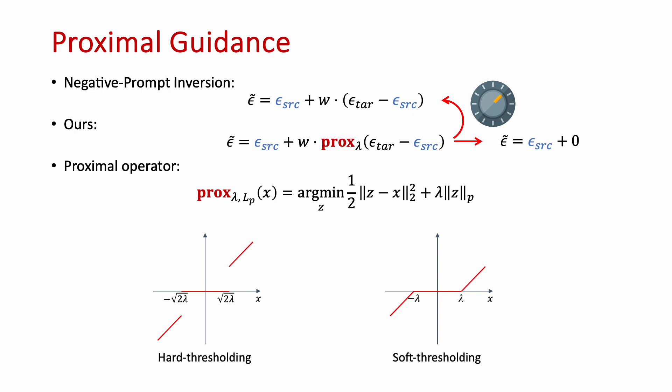So the proximal operator is commonly used in convex optimization. Two commonly used functions are hard thresholding and soft thresholding. We can see the thresholding gives us an extra tuning knob and flexibility. If we threshold all values to zero, then the classifier free guidance score reduces to the source prompt score, and then the generation path becomes the DDIM reconstruction path.